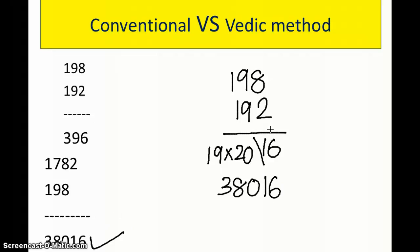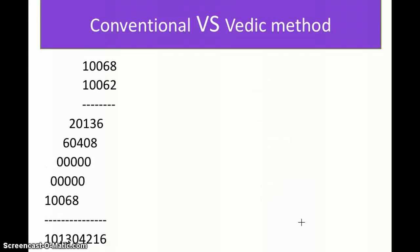You can see that after following three conventional steps we reach the same answer of 38016 — try it yourself. This method saves a lot of time. Now let's expand to even bigger numbers: 10068 × 10062. The conventional approach requires a five-step multiplication with multiple additions, and any misplacement of numbers risks a wrong answer.